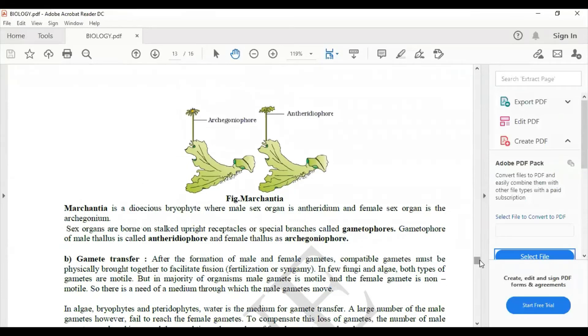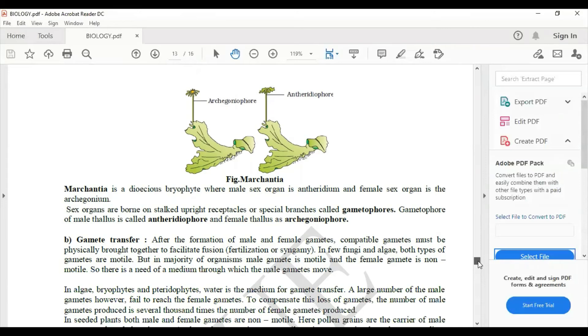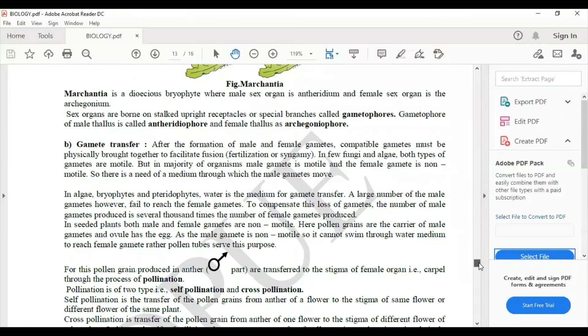This is the Marchantia which is having archegoniophore and antheridiophore. Archegoniophore is female part and antheridiophore is a male part. Moving on, gamete transfer is also being explained here.